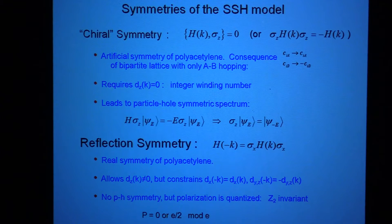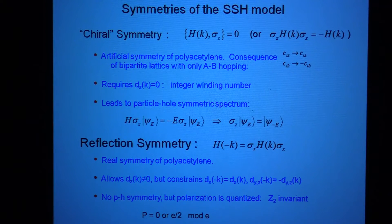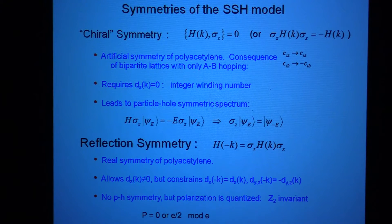The reason this comes about in the Su-Schrieffer-Heeger model is because this lattice that we're talking about is a bipartite lattice. It has an A sublattice and a B sublattice, and the only terms in this Su-Schrieffer-Heeger model are hopping terms which couple the A sublattice to the B sublattice. So if you have a bipartite lattice with only A-to-B hopping, then I can do a gauge transformation which changes the sign of every electron on the B sublattice, and that necessarily changes the sign of the Hamiltonian. And so that defines this operator which anticommutes with the Hamiltonian.